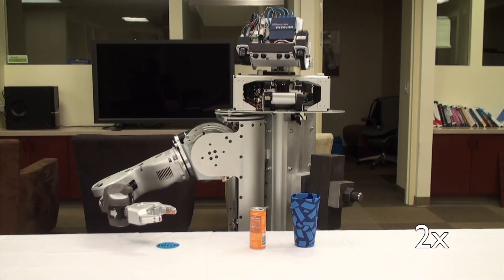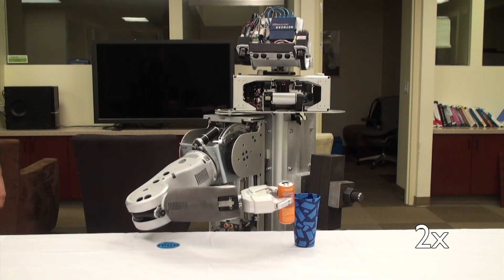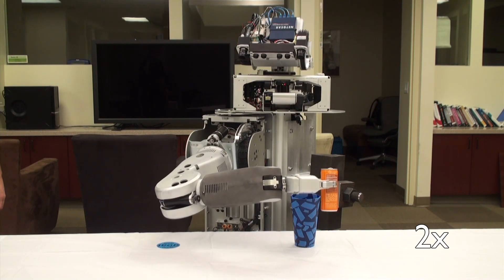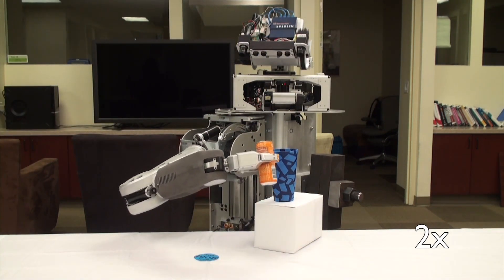For example, when the position of the can and the cup changes, the robot is able to adapt its movement plan. This ability to generalize is important because no situation in real life happens twice.